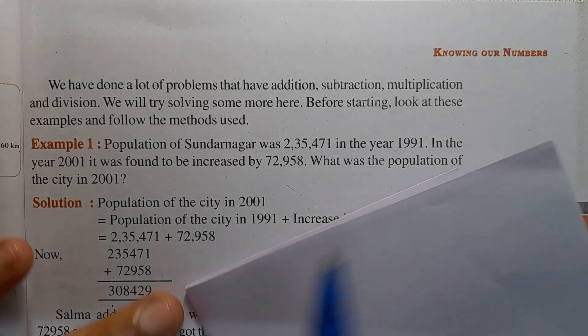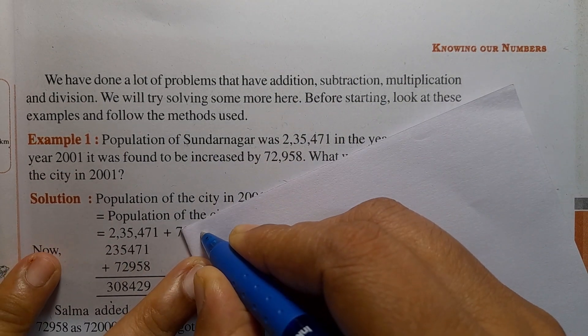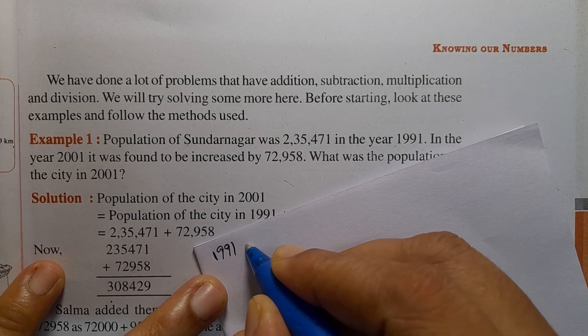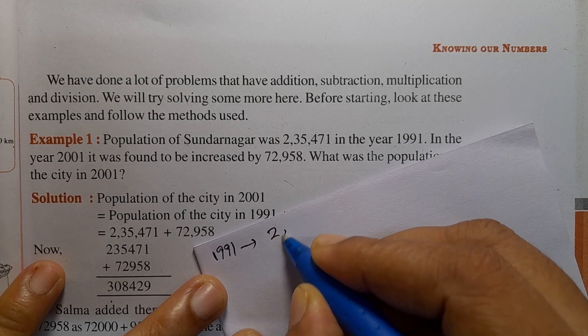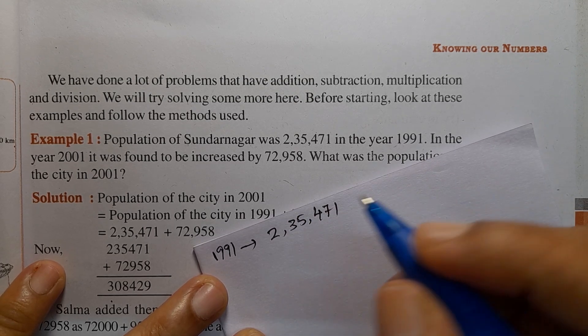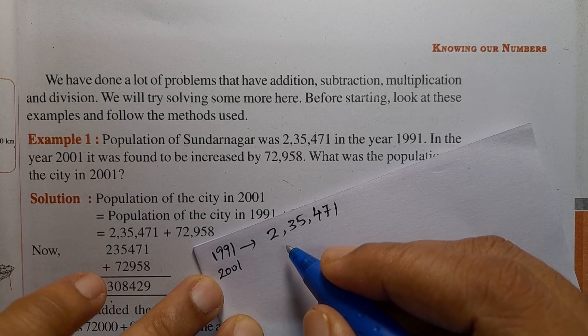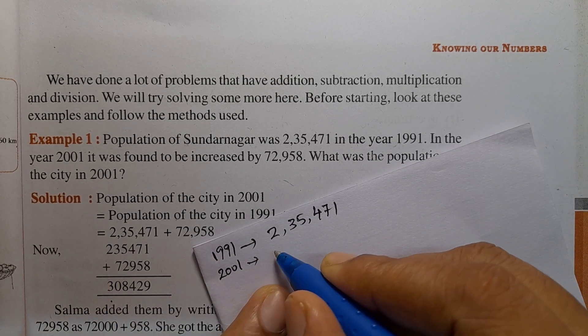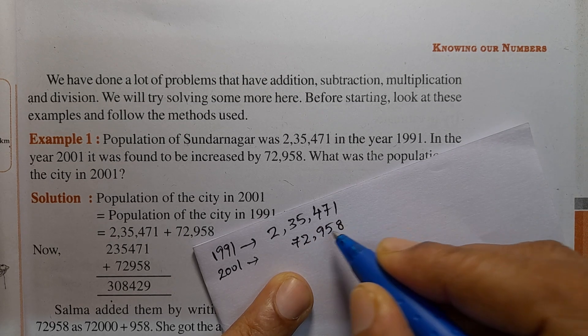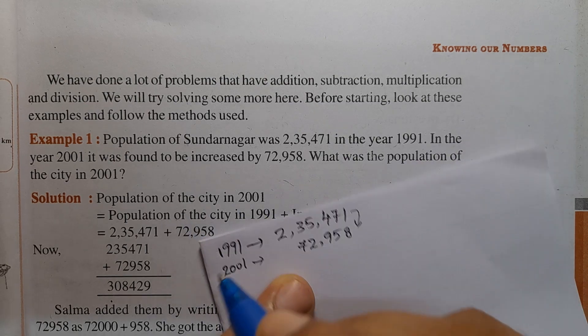So, first problem: Population of Sundarnagar. In the year 1991, population was 2,35,471. Next, in the year 2001, it was found to be increased by 72,958. What was the population of the city in 2001?